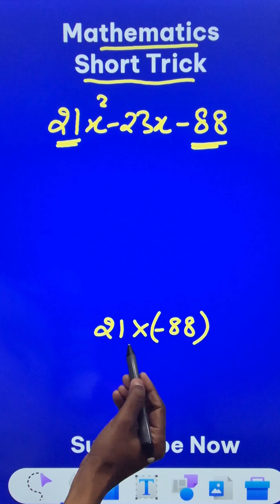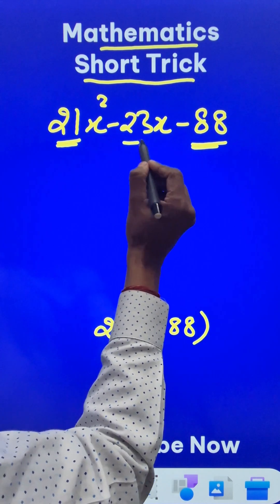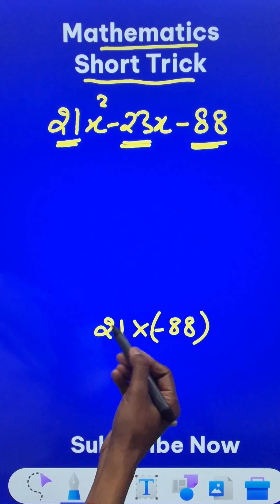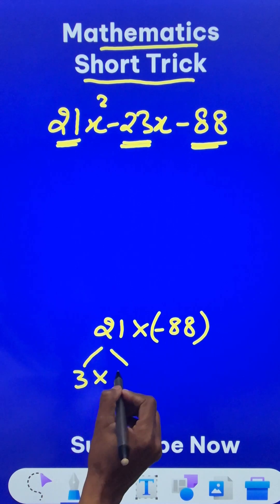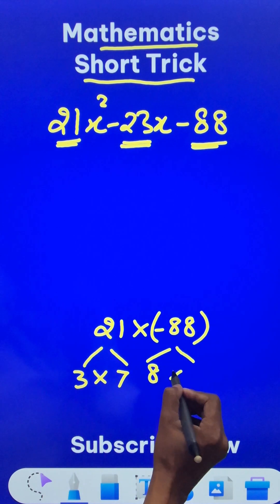Now I need two numbers which add up to negative 23 and whose product is same as this product. So let's split this as 3 times 7 and this as 8 times 11.